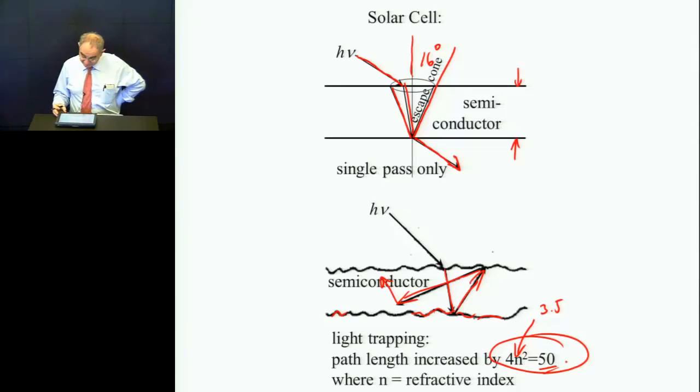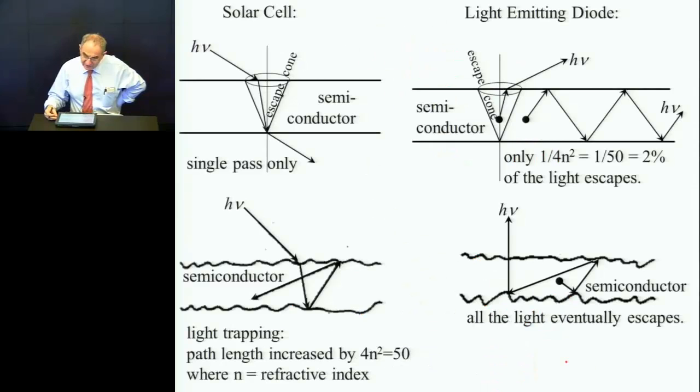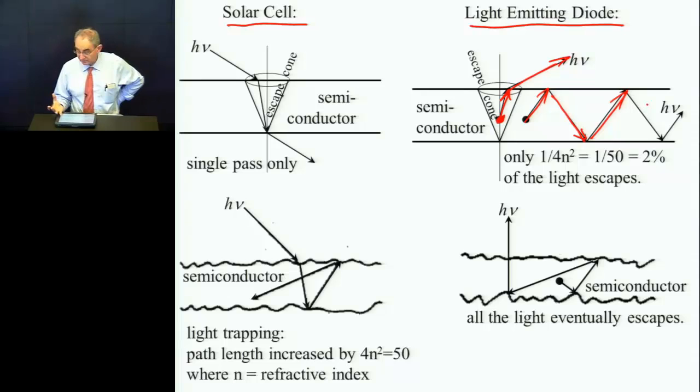And with only a 2% chance of escaping, this light ray will bounce around many times, perhaps over a path length 50 times greater than the original thickness. And so this improvement is quite large. It looks like it's of order of magnitude 1. You have to remember, the refractive index of semiconductors is typically around 3.5. You square it to get 12, you multiply by 4, and now you're up to 50. So it is a huge effect, which somehow was not taken into account in the early days.